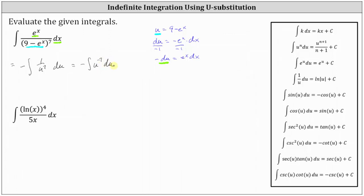Now we integrate applying the power rule of integration, which gives us negative u to the power of negative 7 plus 1, which is negative 6, divided by negative 6, plus c. Simplifying, we can write this as positive 1 sixth u to the power of negative 6 plus c, which in terms of x is 1 sixth times the quantity 9 minus e to the power of x, raised to the power of negative 6, plus c.